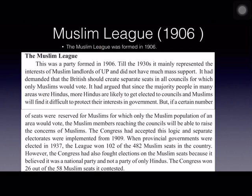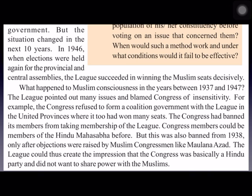In the 1937 elections, the Muslim League got only 4.4 percent of the total Muslim votes cast. The League was popular in provinces like United Provinces, Bombay, and Madras, but weak in provinces like Bengal, NWFP (North West Frontier Province), and Punjab – the very areas from which Pakistan was to be created. Even in Sindh, the Muslim League could not form a government. In 1946, elections were held again and the Muslim League won most of the Muslim seats.